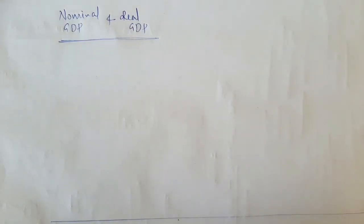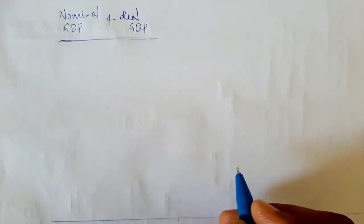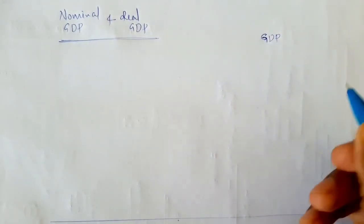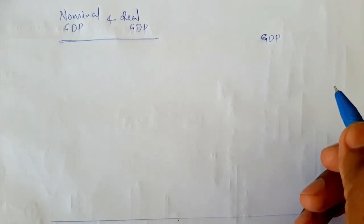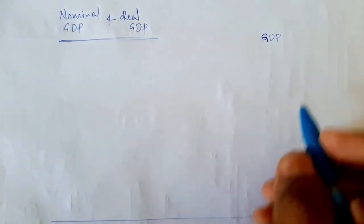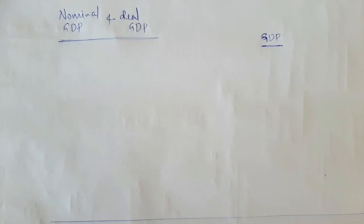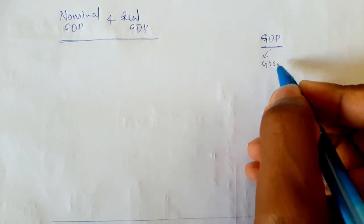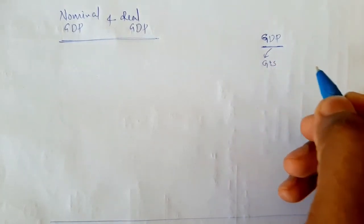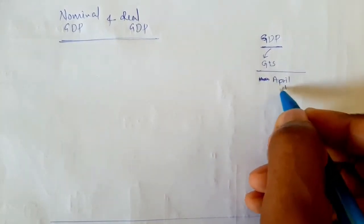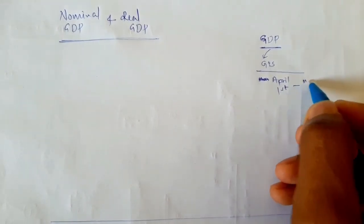Today we are going to learn about nominal GDP and real GDP. Before this, you should understand what GDP is — I made a separate video on this topic. To understand this topic, I am giving a little bit of information on GDP. GDP means the total goods and services produced in a country in one financial year. India's financial year starts from April 1st and ends on March 31st of the next year.